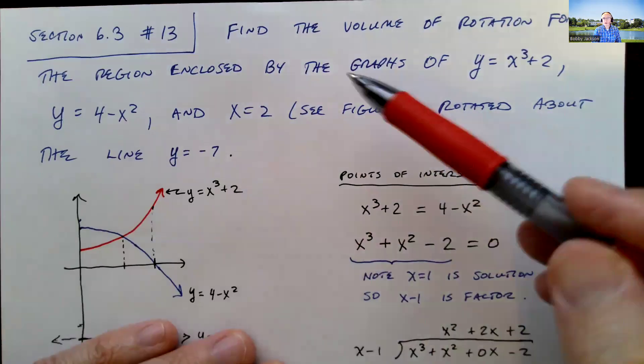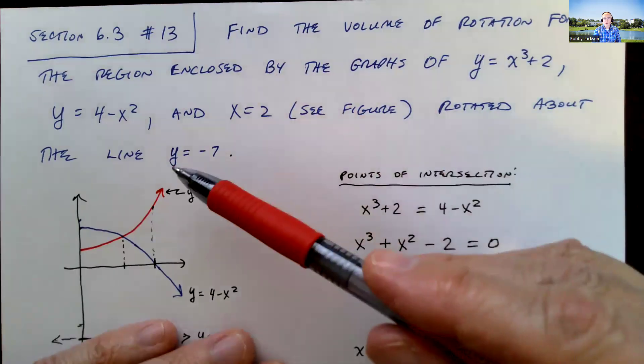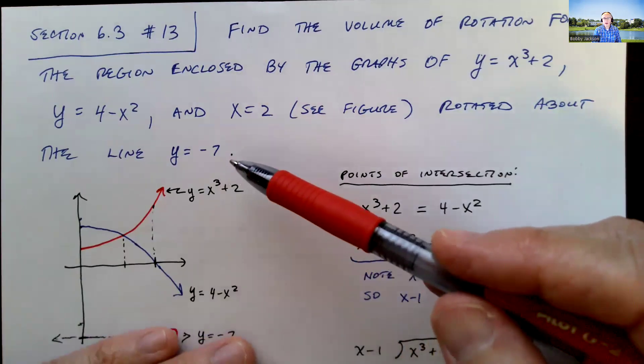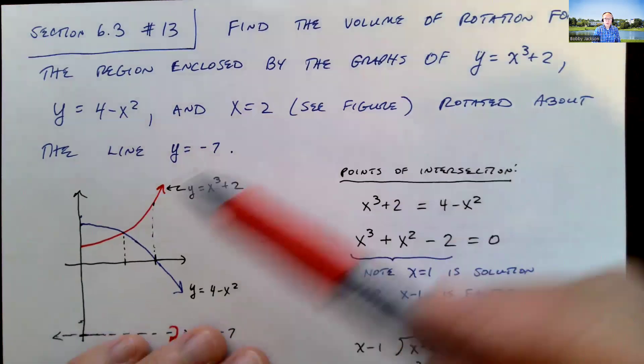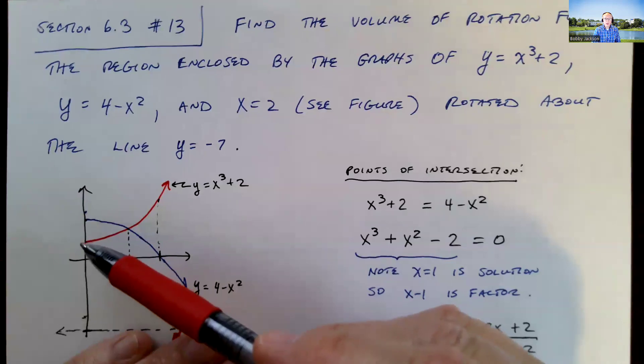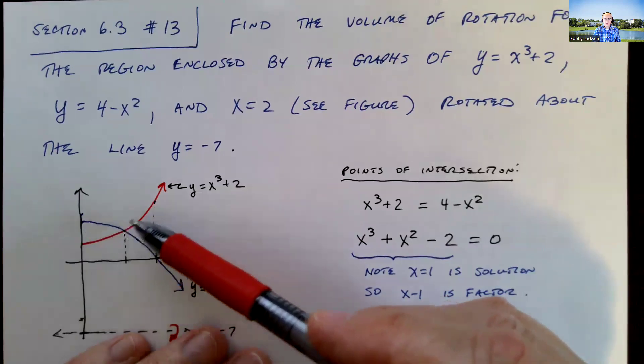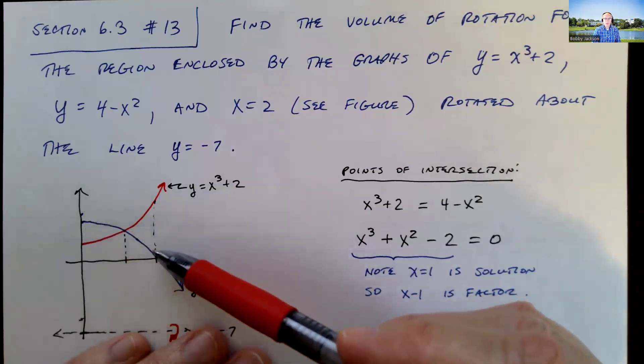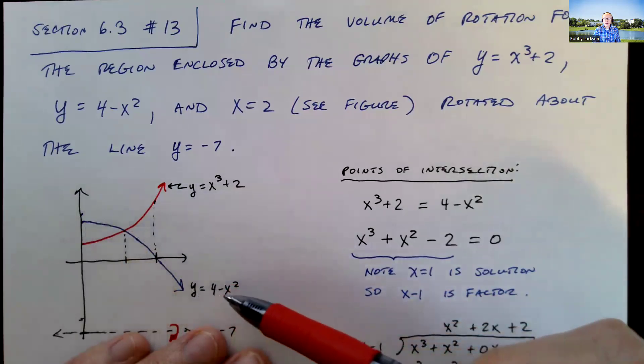We're going to rotate that region about the line y equal negative 7 and find the volume of it. So they don't label the curves, but hopefully you recognize that this is the curve of y equals x cubed plus 2, and this is the parabola opening downward, y equals 4 minus x squared.